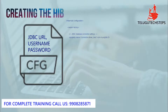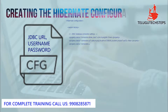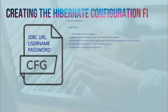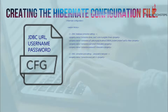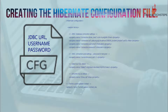The configuration file contains database connection information — that is, JDBC configuration information like database URL, user ID, and password. This information tells Hibernate how to connect to the database, and this configuration file is used for that purpose.